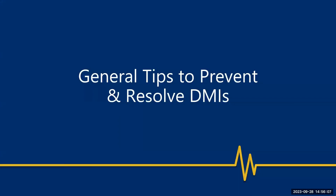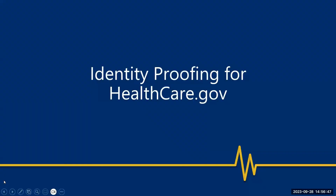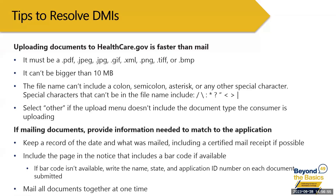Here are some tips to prevent and resolve DMIs. First, provide as much information as possible and be as clear as possible — check that numbers are correct. If a person has changed their name so the application name doesn't match their Social Security card, use the application option to provide that information. When resolving a DMI, uploading documents is always much faster than mailing them.